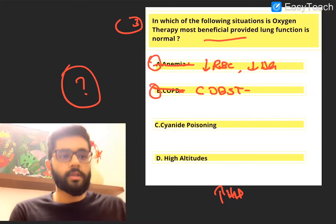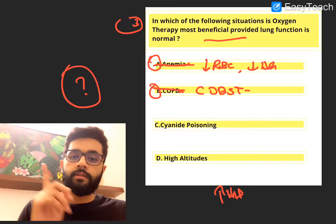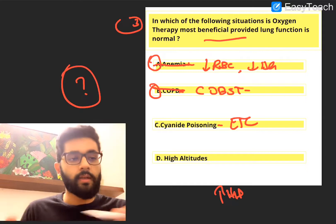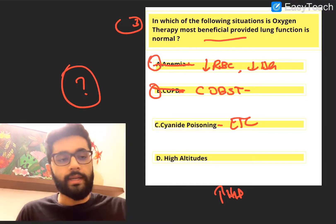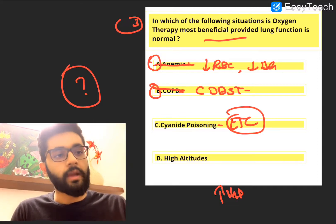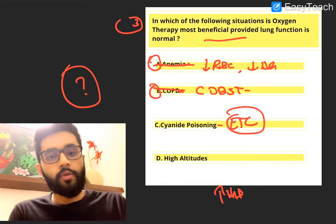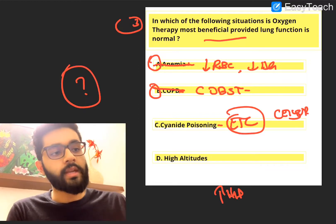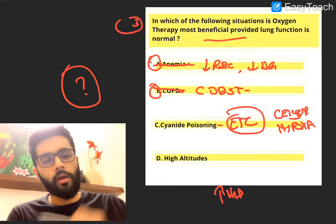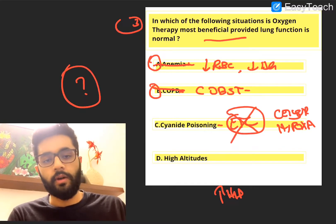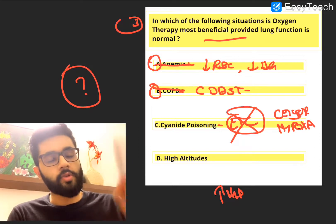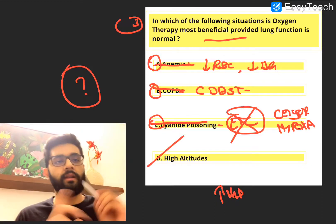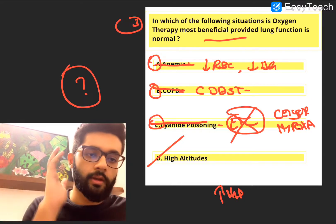Option C is cyanide poisoning. Cyanide disrupts the electron transport chain by binding to the cytochrome oxidase enzyme. When the ETC is disrupted, cells lose their ability to utilize oxygen — leading to cellular hypoxia. Even if you give lots of oxygen, the cells cannot utilize it because the ETC is defunct. So oxygen administration again doesn't help, and the answer must be D, high altitudes — and yes, oxygen does help at high altitudes.